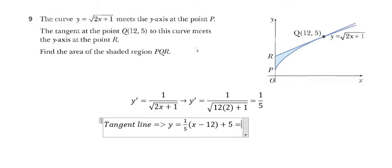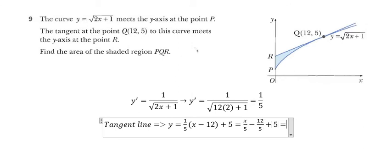So we change the value to 1 over 5, and we get x over 5 minus 12 over 5 plus 5. That gives us x over 5, and 5 minus 12 over 5 is 13 over 5. So the tangent line equation is y equals x over 5 plus 13 over 5.